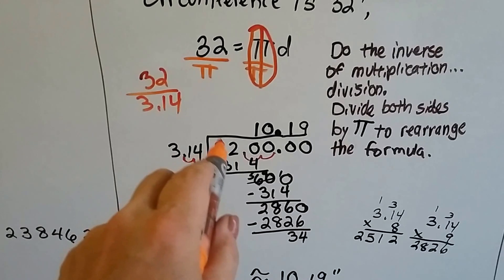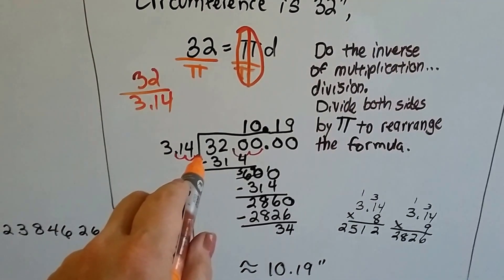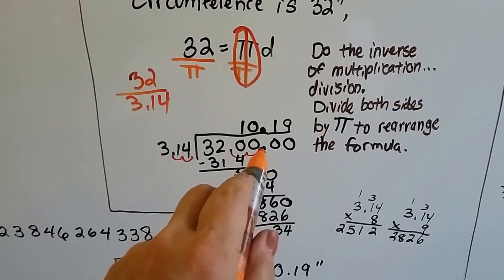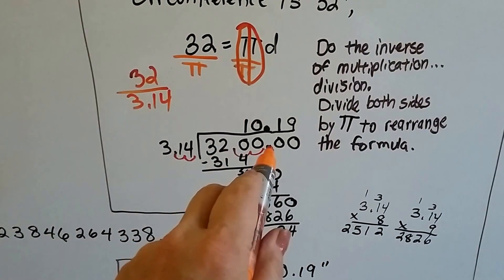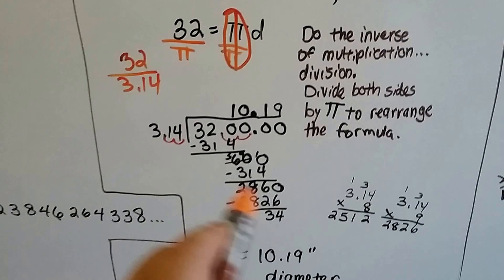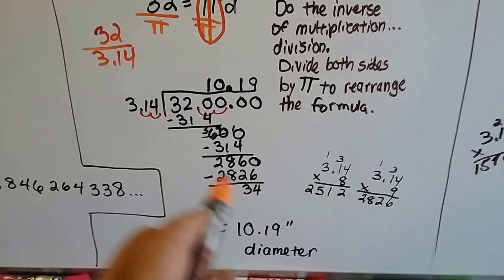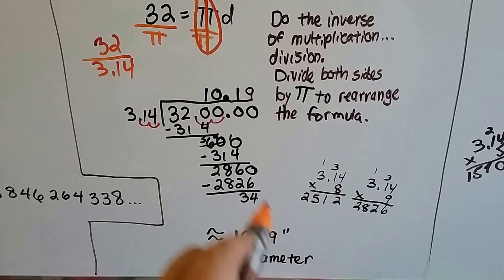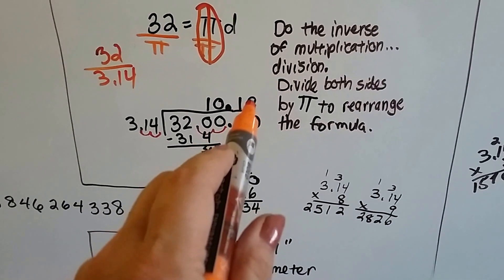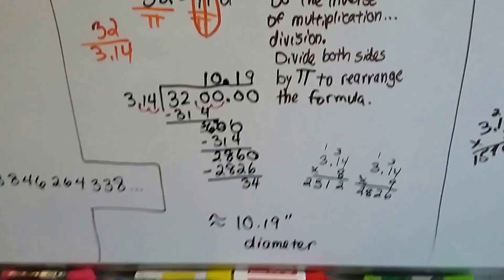We have 32, and we're going to divide it by 3.14. So we move the decimal point two places over in pi. So we've got to move it two places over for the 32, and it becomes 3,200. We put the decimal point up on the top where it belongs. We do our long division, and I come up with 10.19. It would have kept on going. I could have added more zeros, but 10.19 is good enough. So we can say it's approximately 10.19 inch diameter.